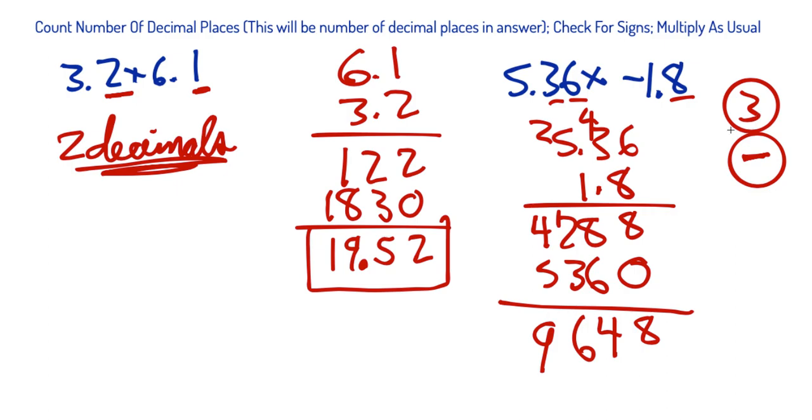How many decimal places? Three. One, two, three. Boom. Decimal point goes there. What is the answer? Negative sign. All those rules came into play. Thank goodness I wrote them. That is awesome. That is your answer. Negative 9.648. Good luck, guys. Be careful.